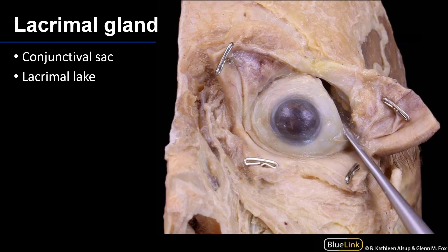Our story starts in the superior lateral aspect of the eye, which has been depressed here to reveal the lacrimal gland. The lacrimal gland secretes lacrimal fluid, or tears, into the conjunctival sac — that is the space between the palpebral conjunctiva and the bulbar conjunctiva here.